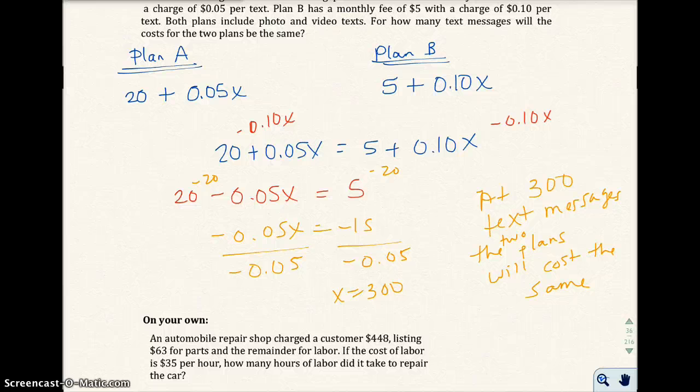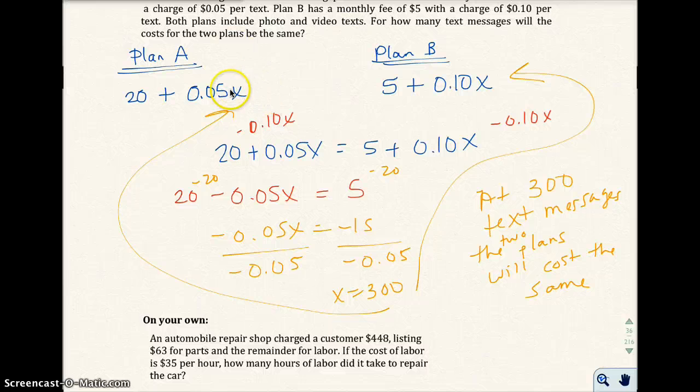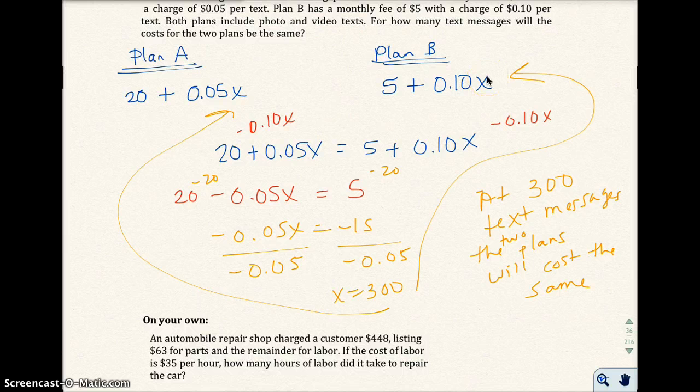If you want to check this, when you plug 300 into here and 300 into here, you'll get the cost for both plans. When you put 300 in here into this first plan, you'll get $35. When you put 300 in here, you'll get $35 also. So the plans do cost the same.